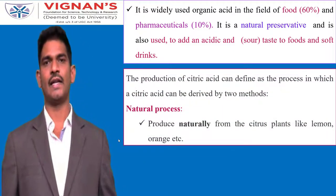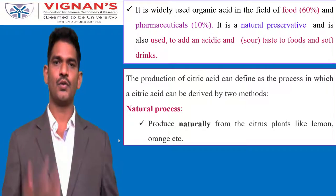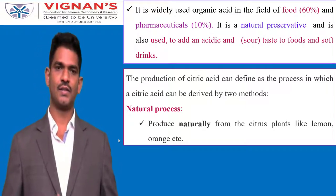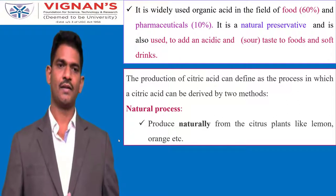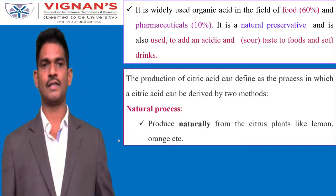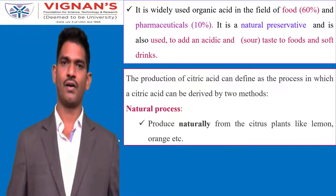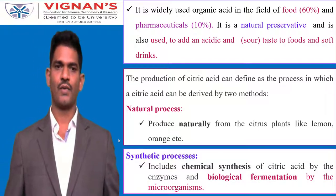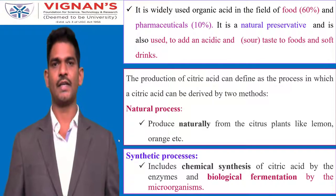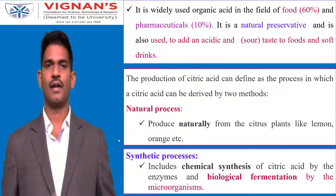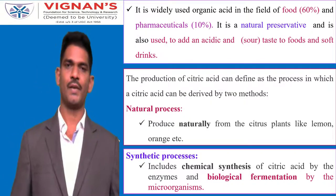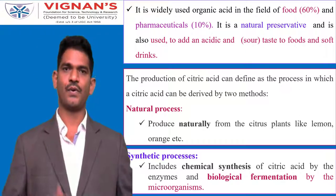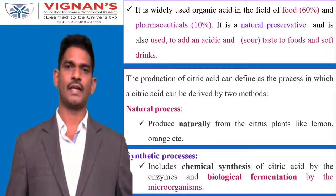The production of citric acid can be achieved in two ways. One is the natural process, which produces citric acid naturally from citrus plants, especially lemon and orange. Another way is the synthetic process using chemical synthesis with addition of enzymes. A third method is the biological fermentation process by adding microorganisms, which is the preferred process for production of citric acid.